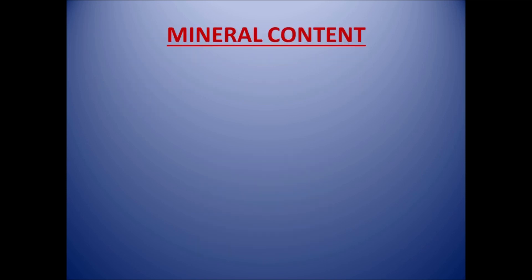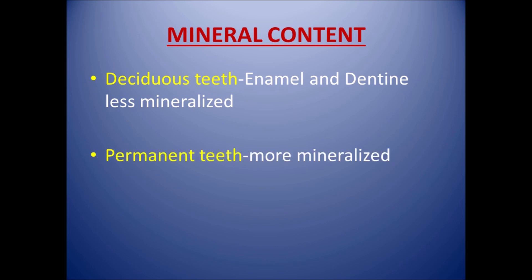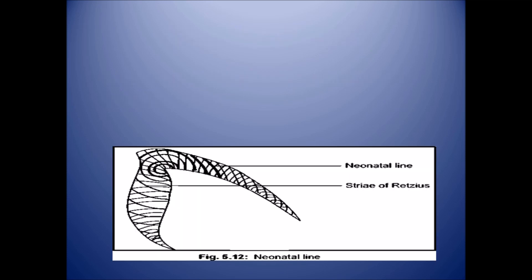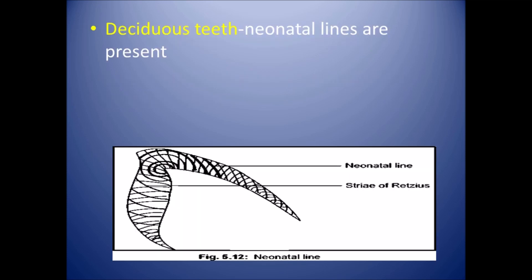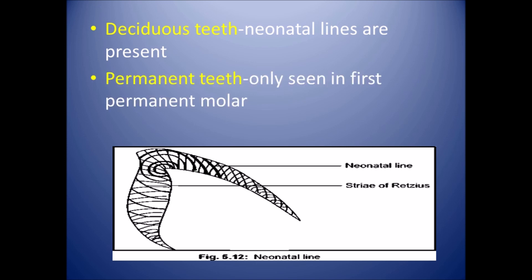Moving on to mineral content, the enamel and dentine of deciduous teeth are less mineralized as compared to permanent teeth. In deciduous teeth, neonatal lines are present, but in permanent teeth neonatal lines are seen only in the first permanent molar.